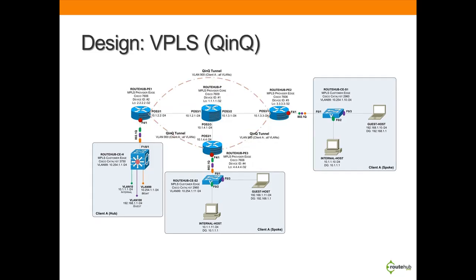We will show you another VPLS solution configured for a feature called QnQ. This basically allows all VLANs for our client to be sent through a QnQ tunnel, to allow better scalability and to allow our clients to use their own VLAN tags within their network — compared to the VLAN-based solution where each VLAN must be defined and unique on the PE routers. Again, we will show you the configuration for this design step-by-step.